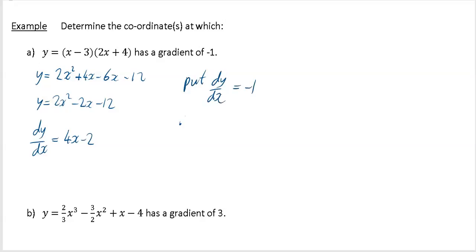That means minus 1 equals 4x minus 2. So that's just a linear equation for us to solve. Minus 2 comes across and becomes plus 2, so you've got 1 equals 4x, and with a bit of rearranging you're going to get x equals 1 quarter.